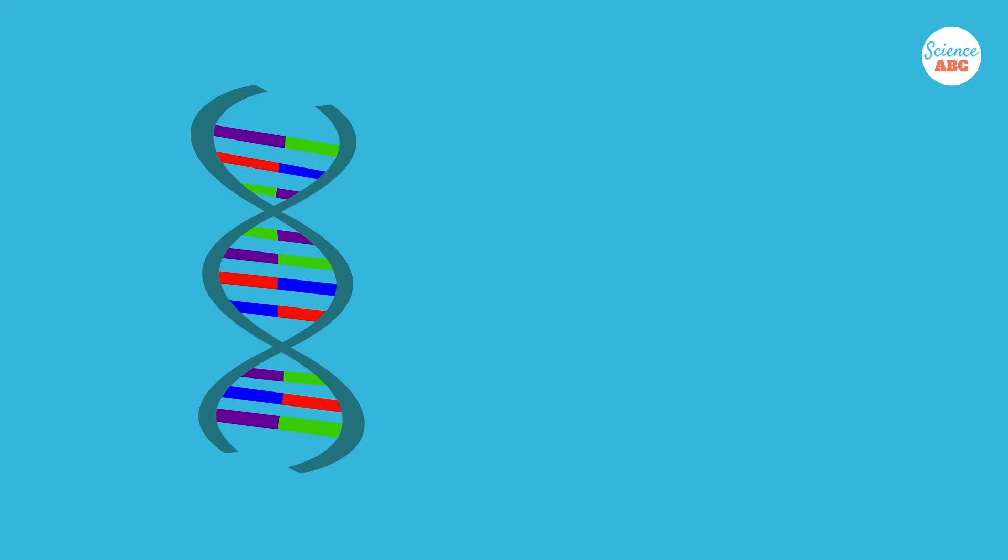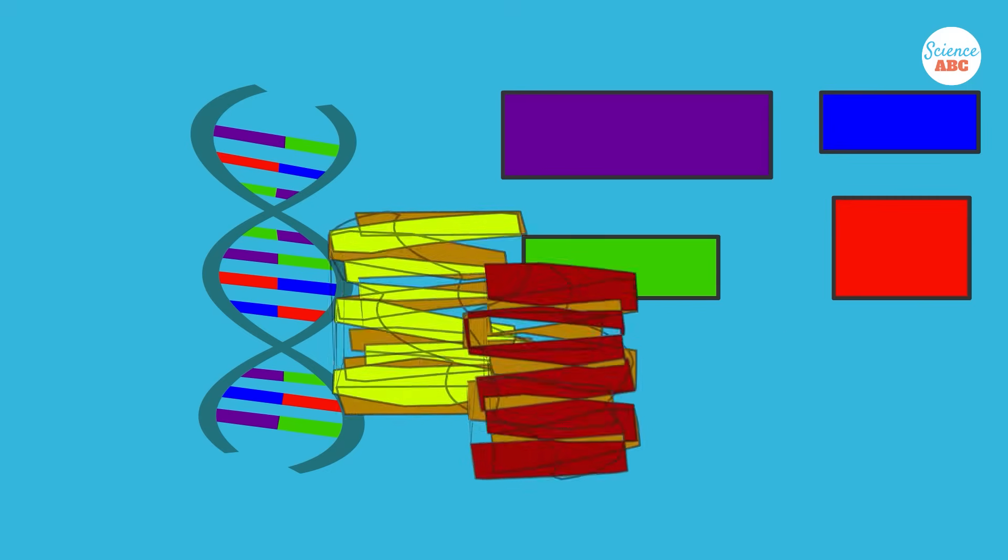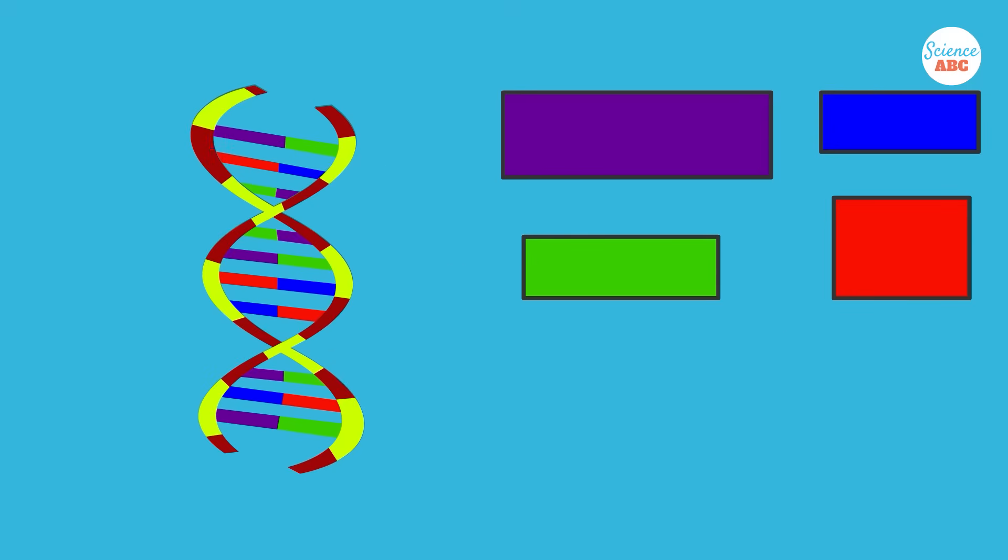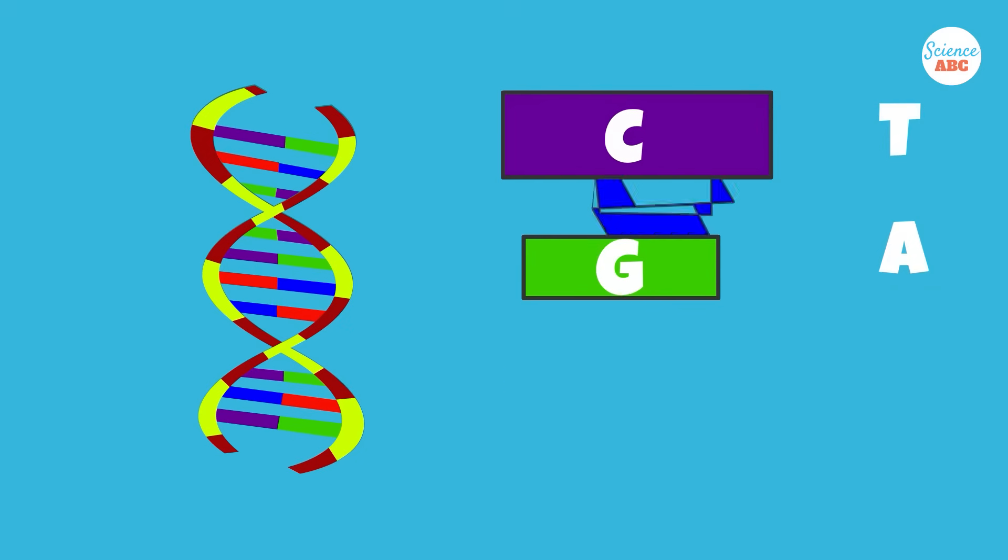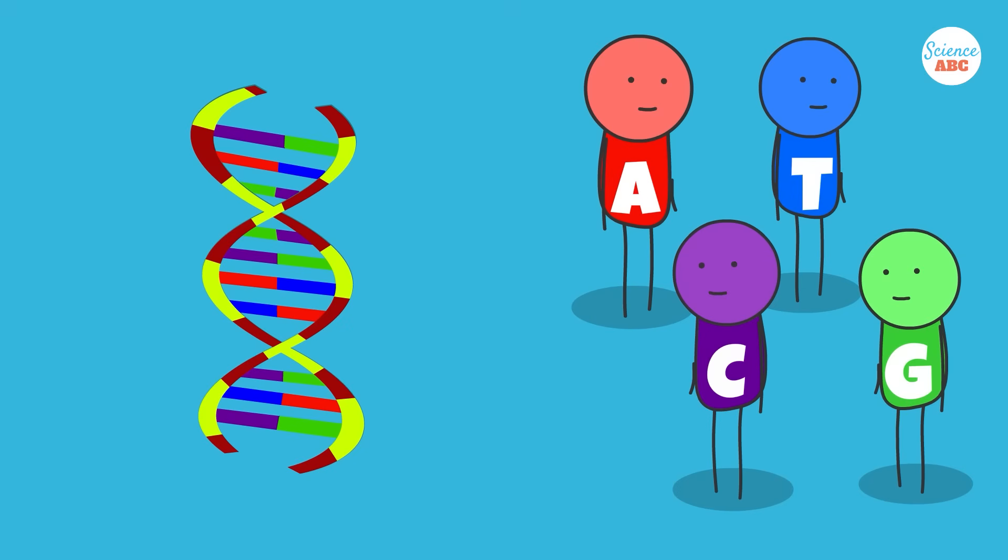This giant molecule is made up of even smaller molecules. The sides of the ladder are composed of sugar and phosphate molecules, while the rungs of the ladder are made of four chemical letters: A for adenine, T for thymine, G for guanine, and C for cytosine. These four letters come in pairs that are destined to match with each other. A pairs with T, while C pairs with G. This repeats on and on until we form a giant molecule of DNA.